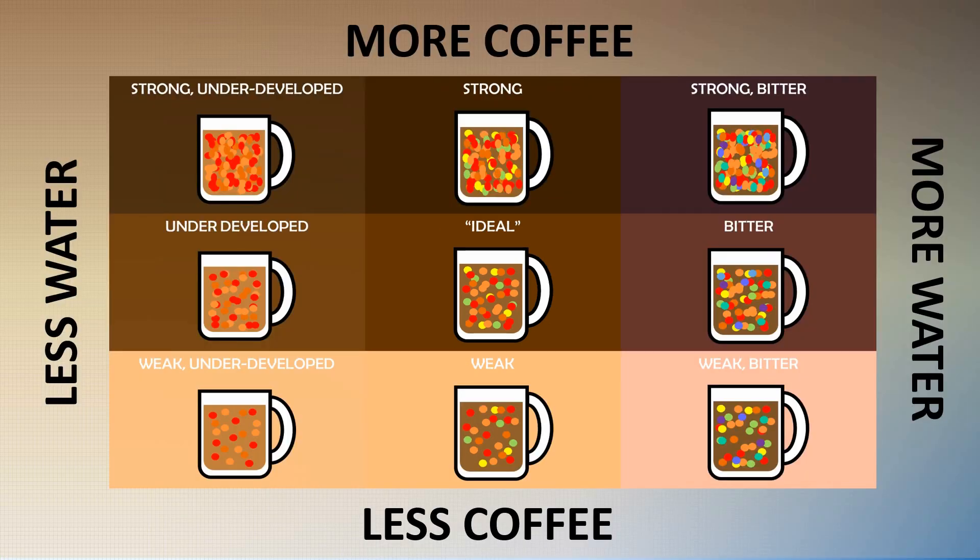The amount of coffee and water are obviously not the only variables that will impact these things. Other factors such as water temperature or the fineness of your grind will have an impact as well. However, adjusting the amount of water or coffee is something anyone can do very simply, and with a little trial and error can have a significant improvement in any brew using any method.